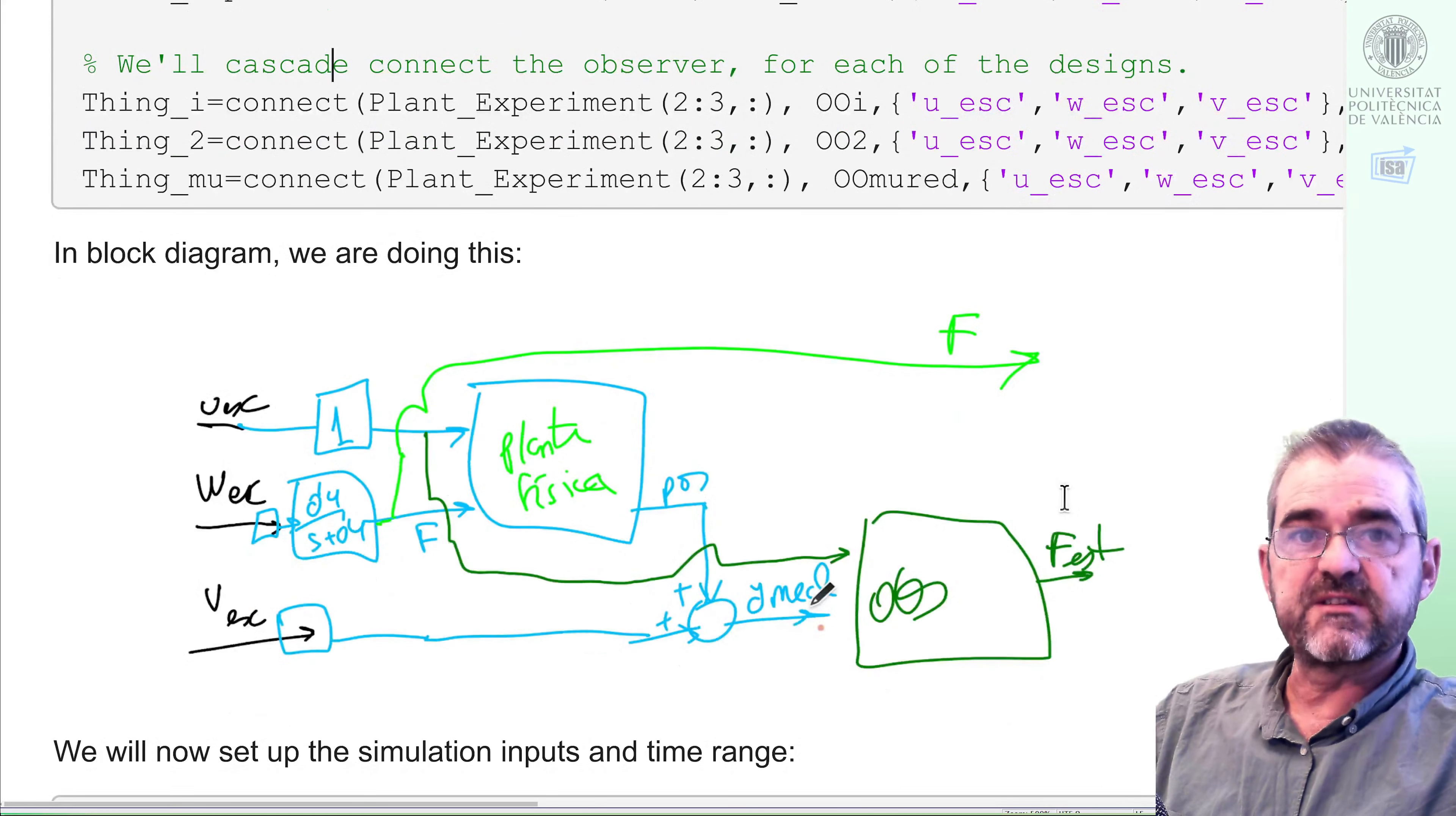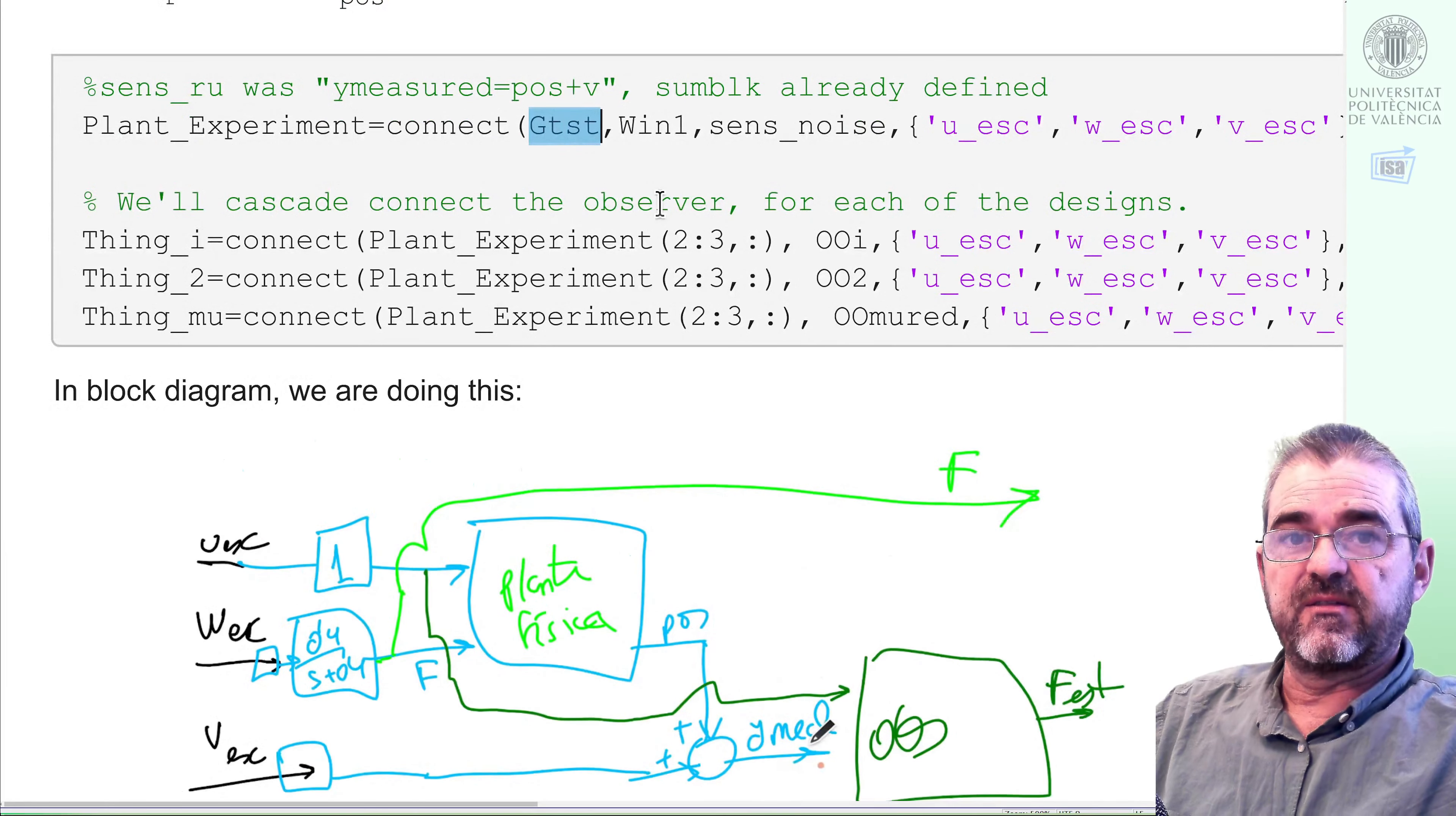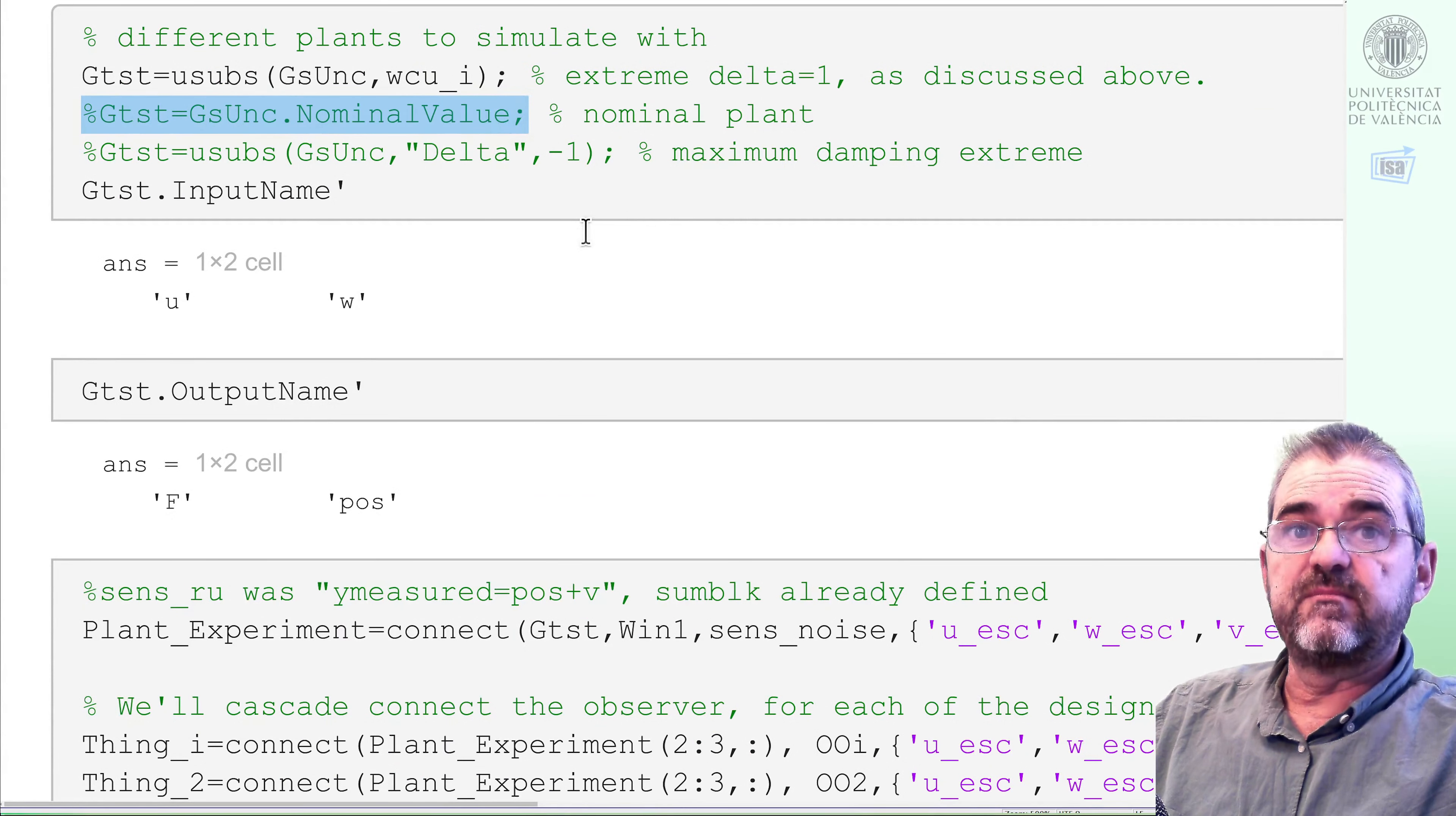So, once we have these things, we need to be aware that in order to apply lsim, the linear simulation command for MATLAB, we don't need uncertainty. So this gtst, the actual transfer function, the actual physical system we are going to test, will need to have some uncertainty replaced. You can simulate whatever uncertainty you wish, random choice, or for instance in here this line would simulate the nominal plant.